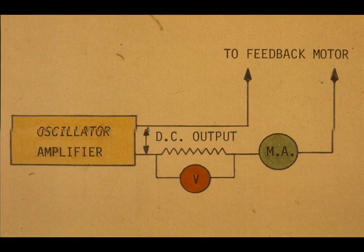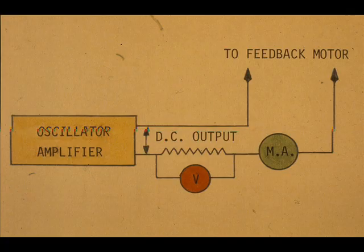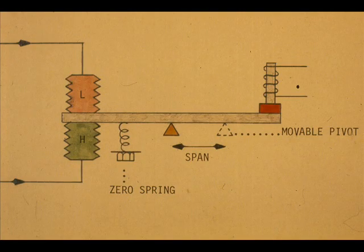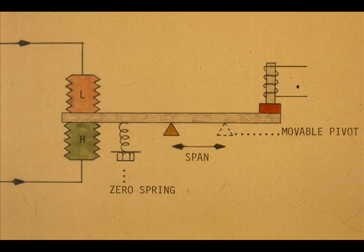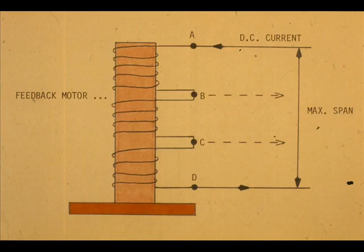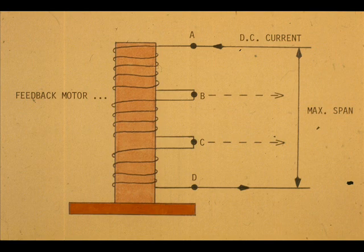The process input can be converted to either a voltage or current output value relative to the input. The zero and span adjustments are usually mechanical in the force balance type. In some models, span adjustment also requires an electrical adjustment. The DC output is connected across A and B for minimum, A and C for medium, and A and D for maximum spans.